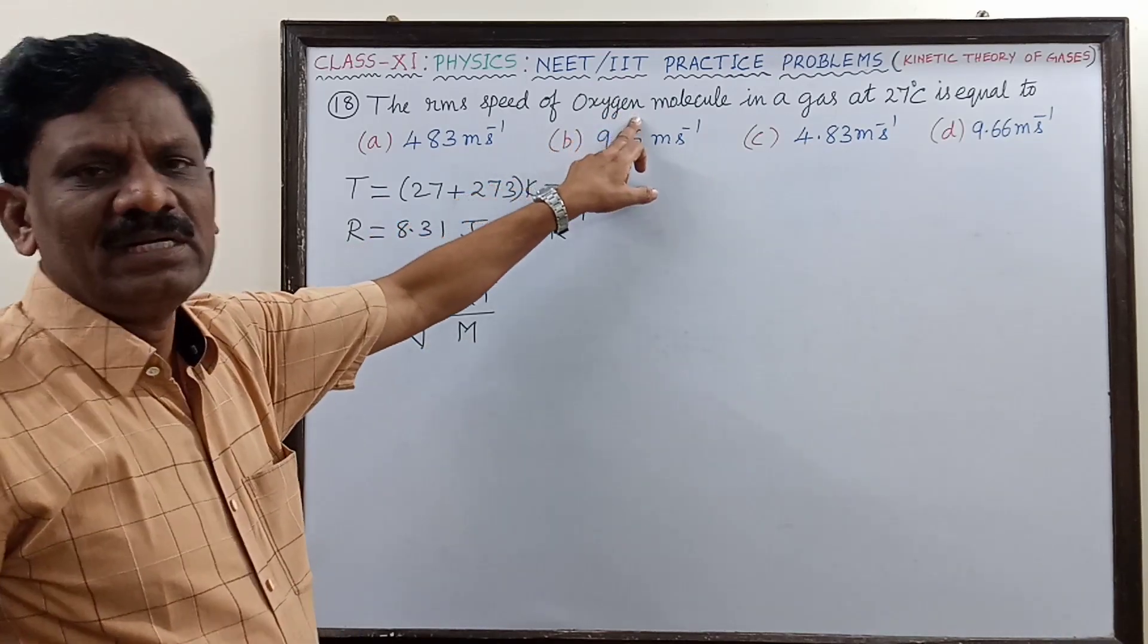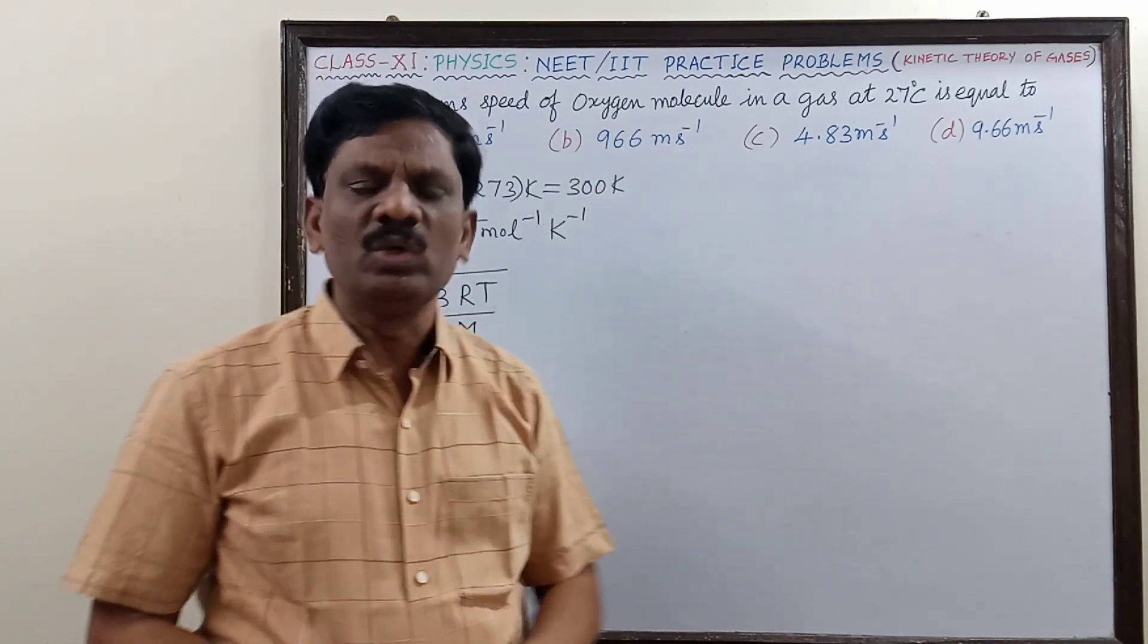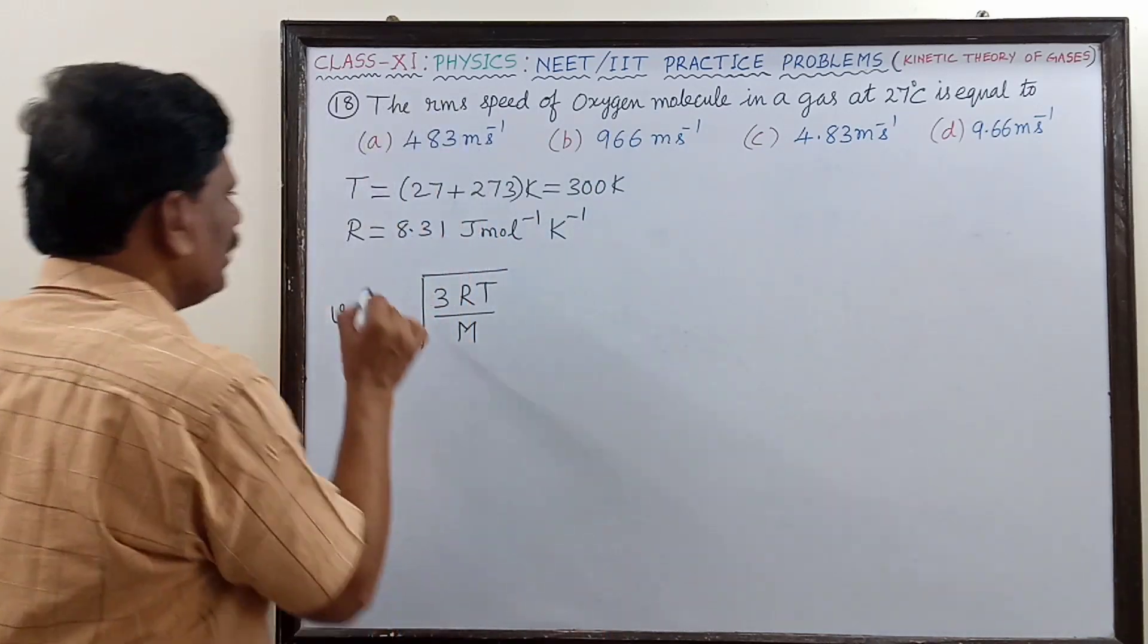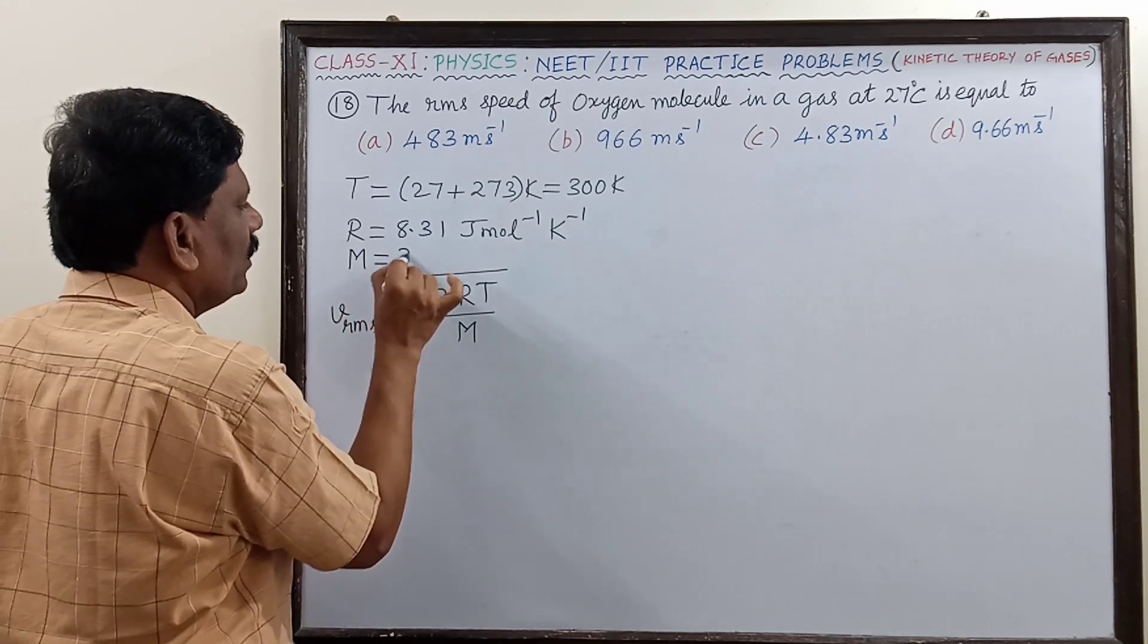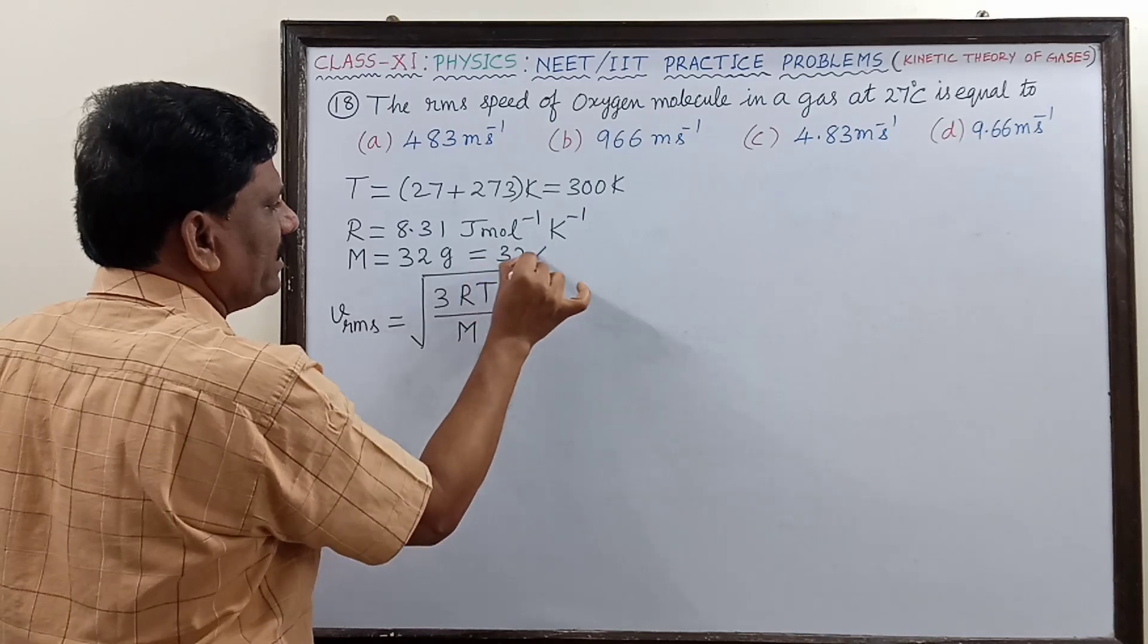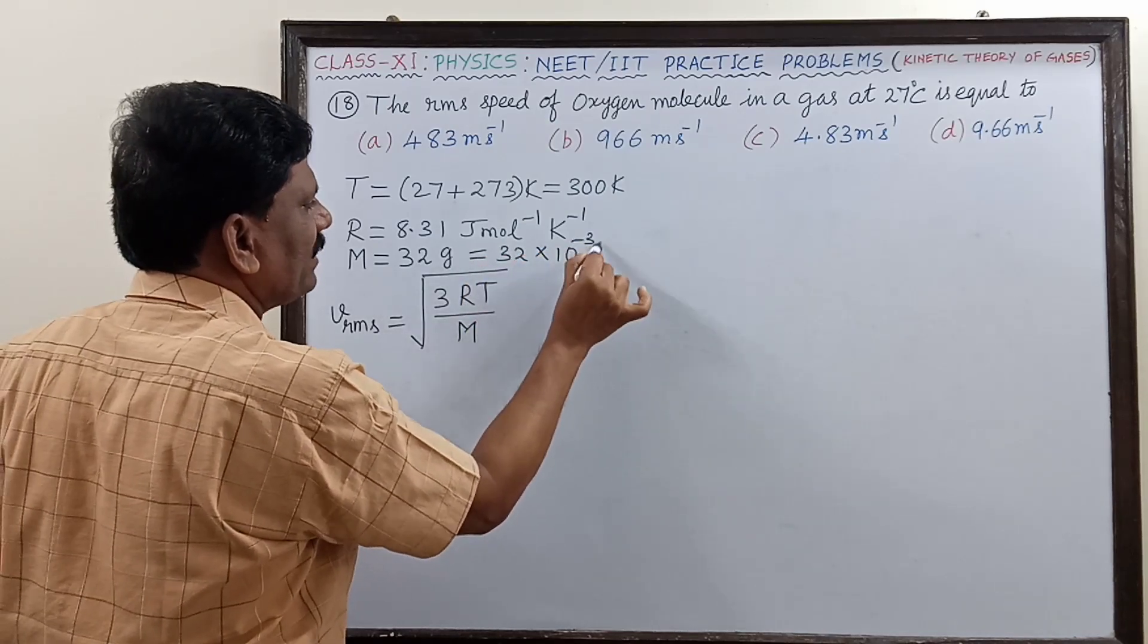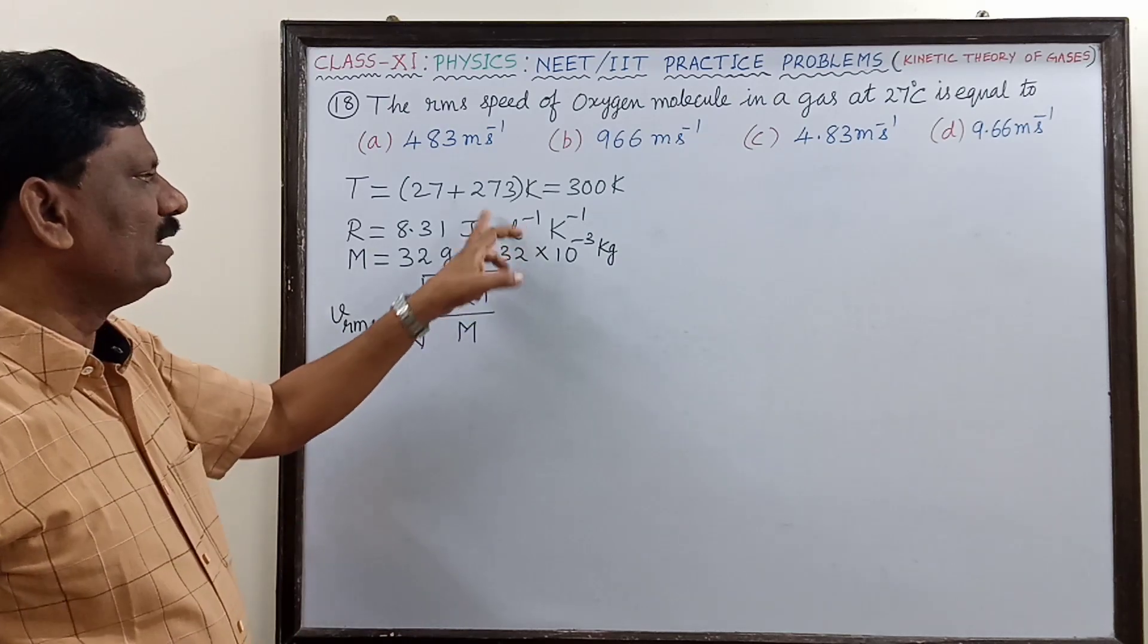Oxygen is a diatomic molecule - they are given oxygen molecule O2. So the molar mass of oxygen is equal to 16 times 2 equals 32 grams. This can also be written as 32 times 10 to the power of minus 3 kilogram in SI unit.